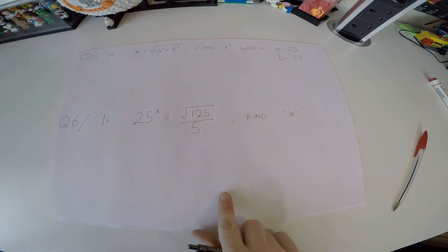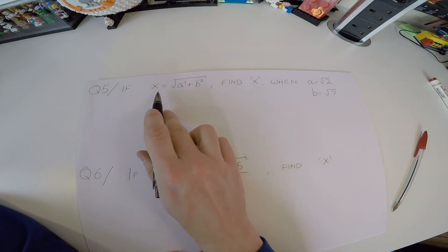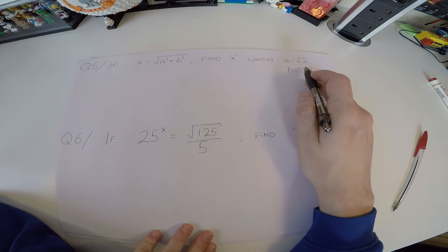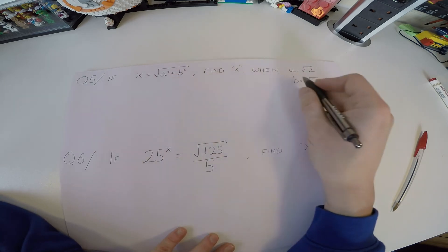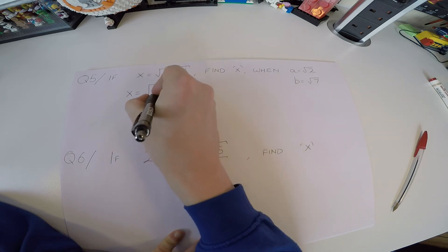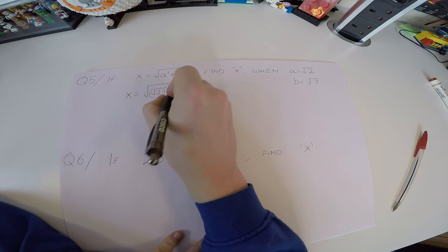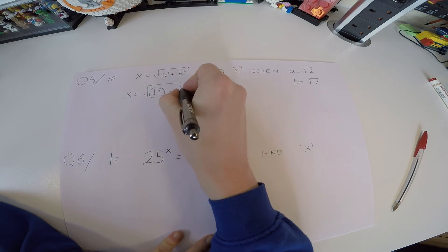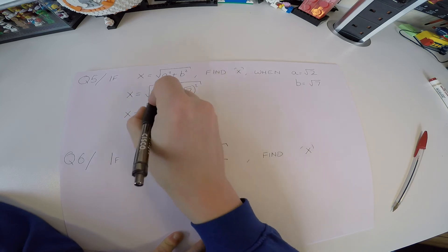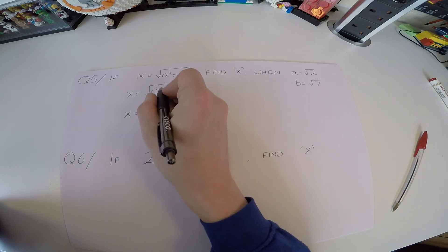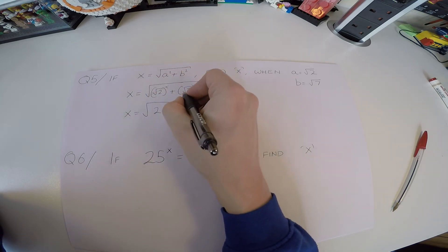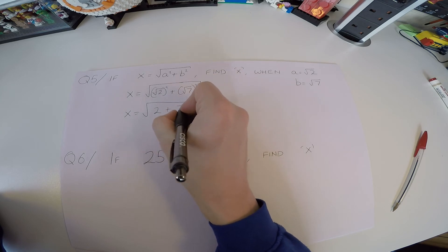The substitution question: if x equals the square root of (a² + b²), find x when a = √2 and b = √7. Replace a with √2 and b with √7: x = the square root of (√2)² + (√7)². A square root squared cancels, giving just 2; similarly (√7)² gives 7.